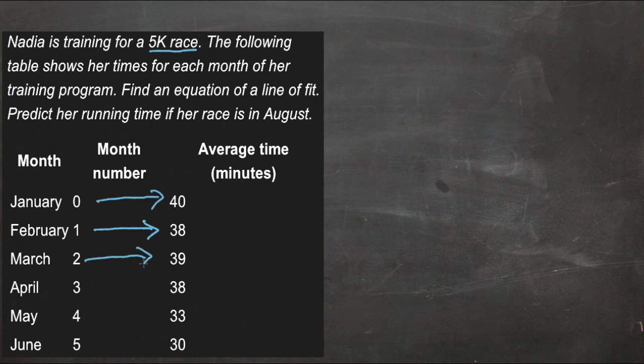In March, she actually slowed down just a little bit, and then picked that time up again in April, and then was faster again in May, and faster again in June.